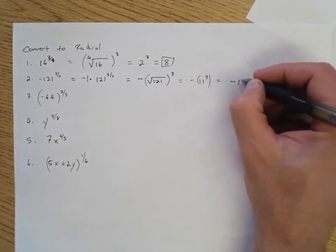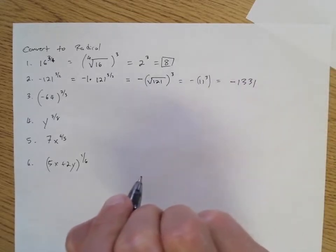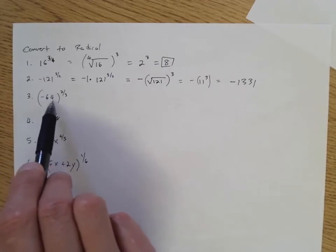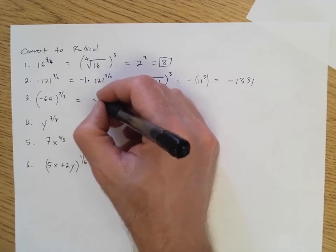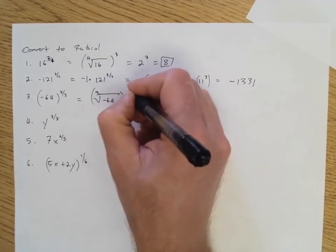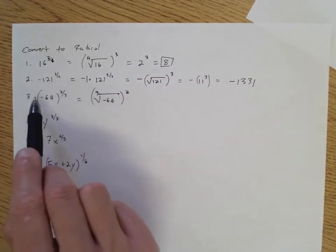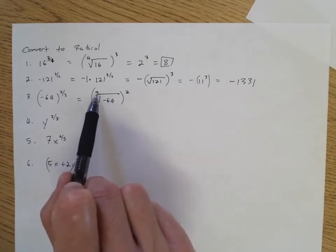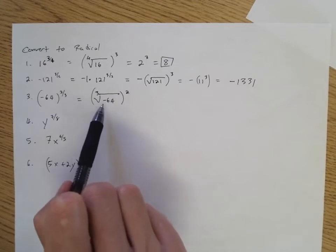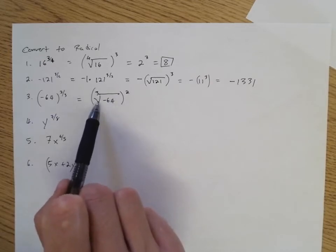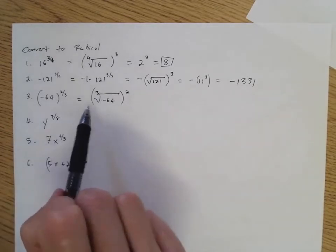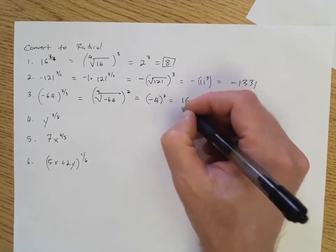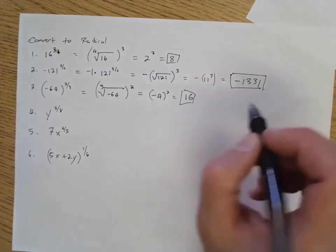Number three is a little different because the negative is included with the 64 — that's our base. So when we set this up we have the cube root of negative 64 to the power of two. We can take an odd root of a negative number; this is different from an even root where we couldn't take the square root of negative 64 and get a real number. The cube root of negative 64 is negative four, and negative four to the positive two is 16.